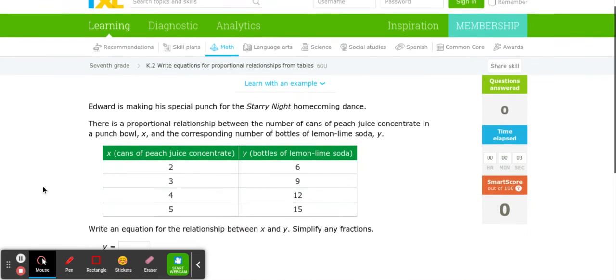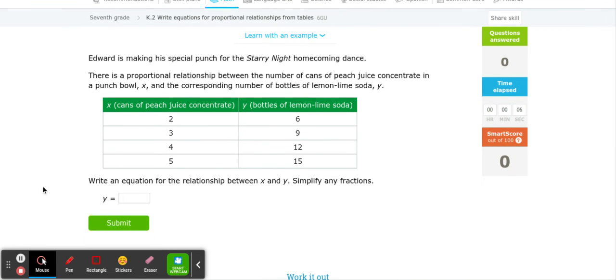So the question asks us, Edward is making a special punch for Starry Night Homecoming dance. There is a proportional relationship between the number of cans of peach juice concentrate in punch bowl, X, and the corresponding number of bottles in the lemon-lime soda, which is Y. So we have a table given right here.